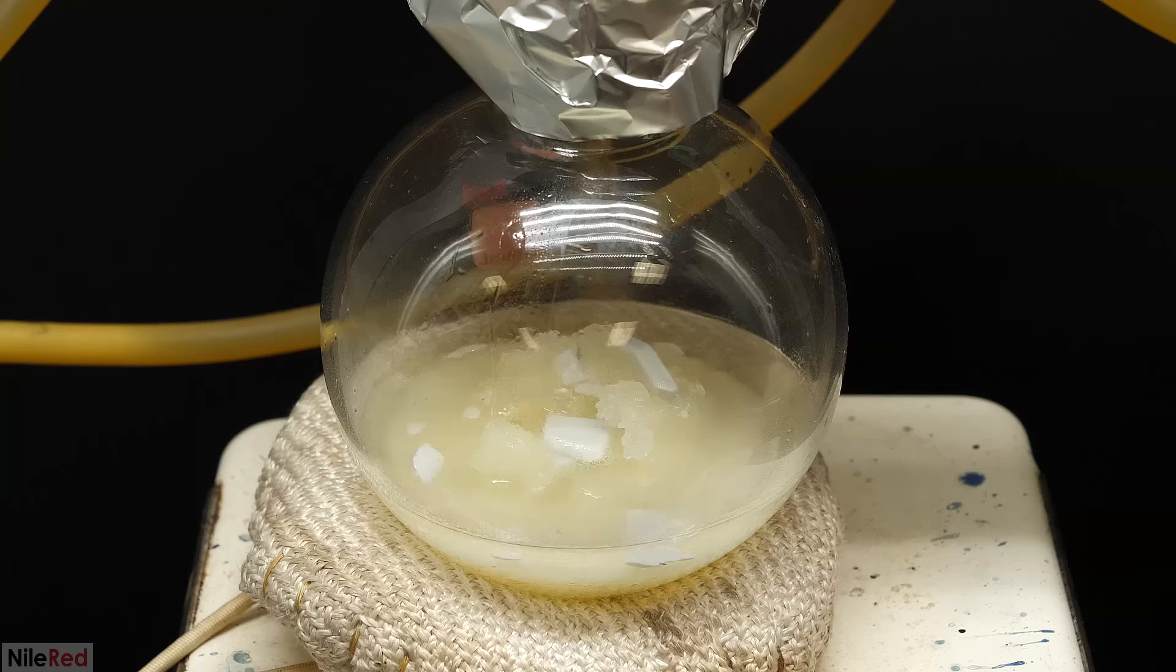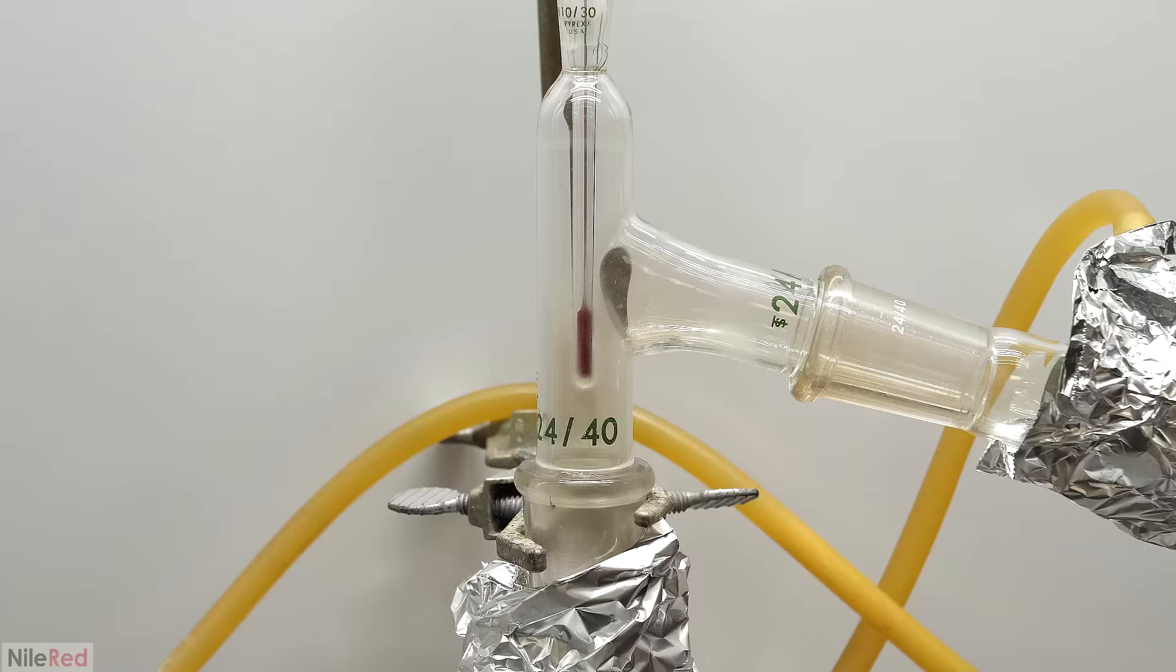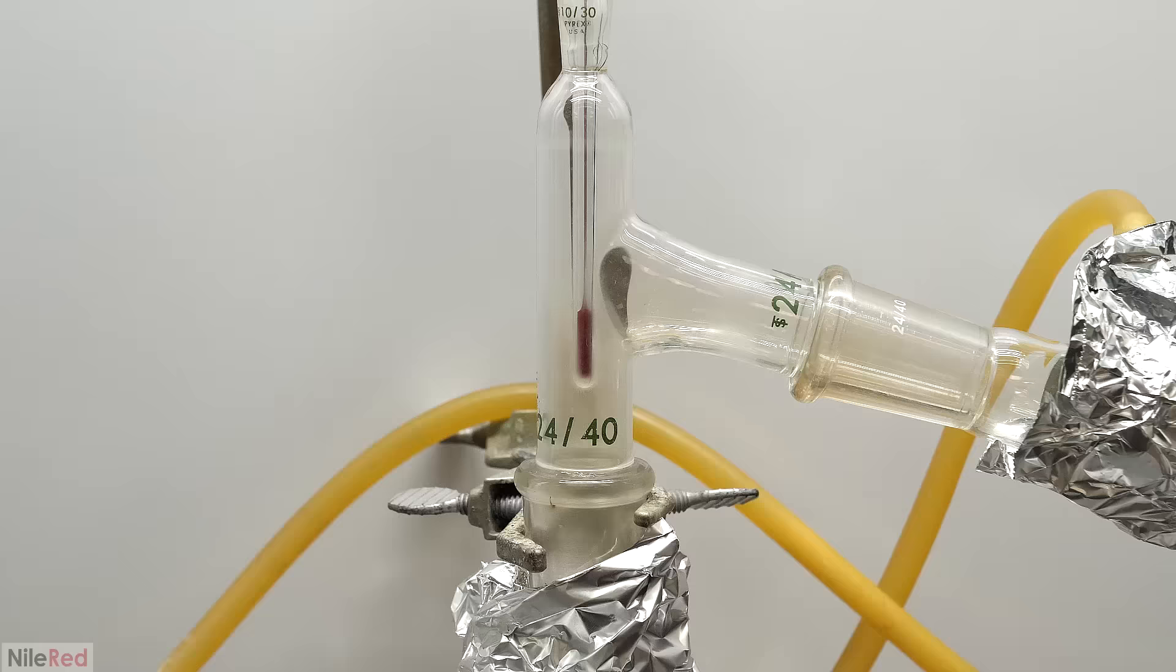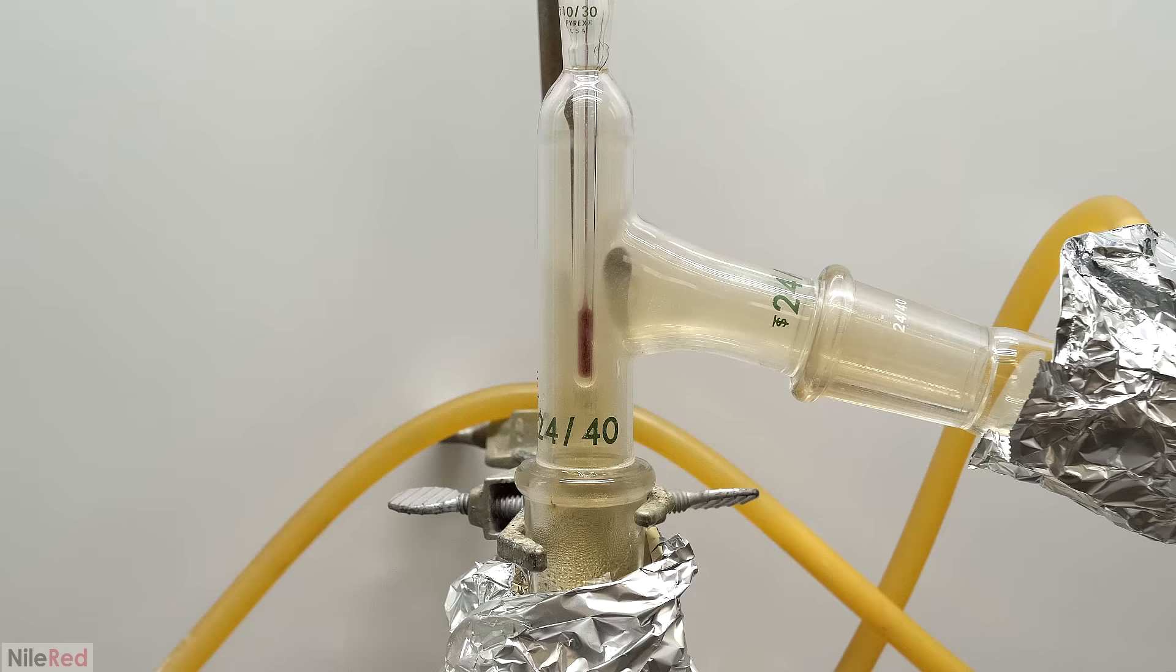After only like 30 seconds, it started to bubble a lot more, which told me the reaction was picking up. And only something like a minute after this, nitric acid started condensing on the sides. To retain the heat, and to help the vapors escape from the flask, I insulated it with some aluminum foil. Above it though, I removed the foil to show you guys what was going on. As the reaction continued, more nitric acid was produced, and it slowly climbed up the adapter.